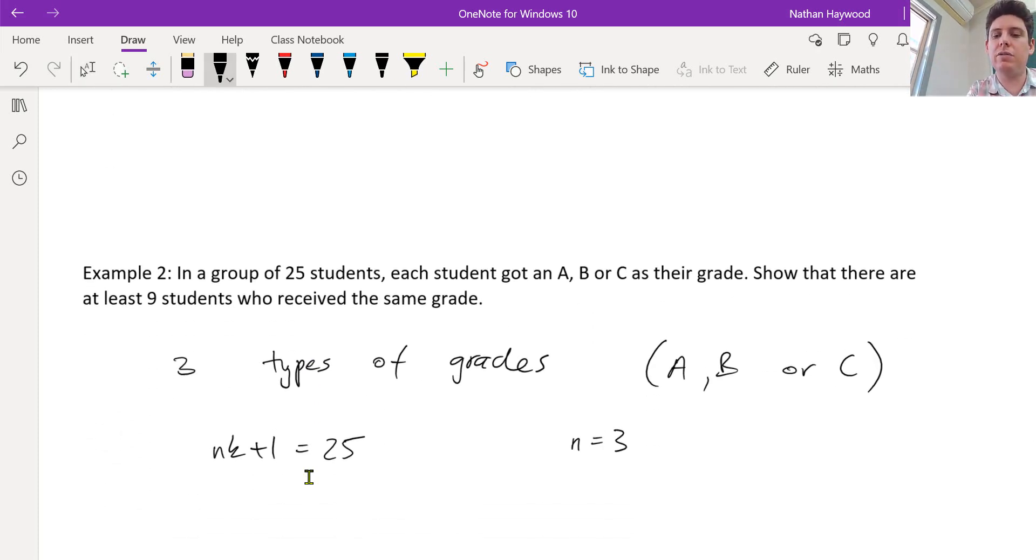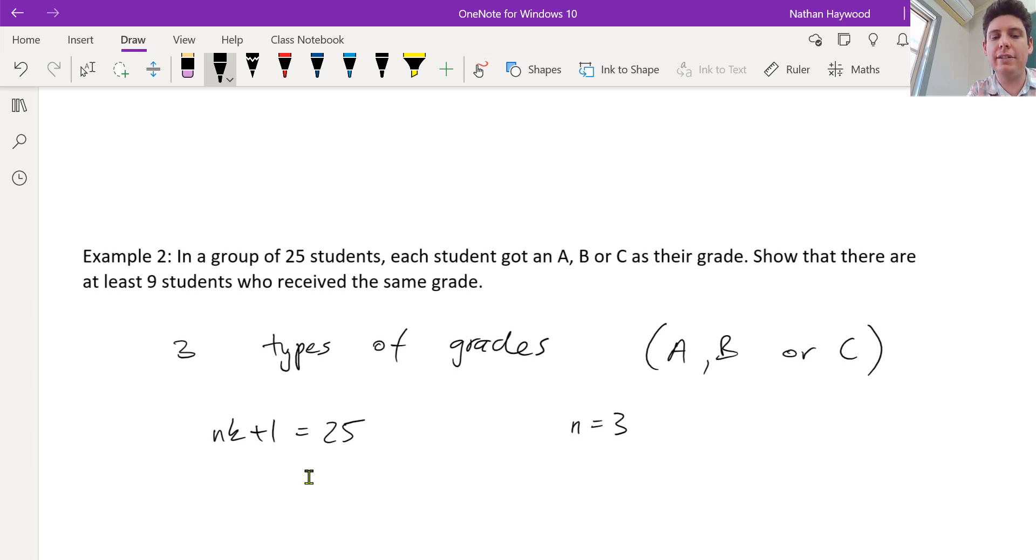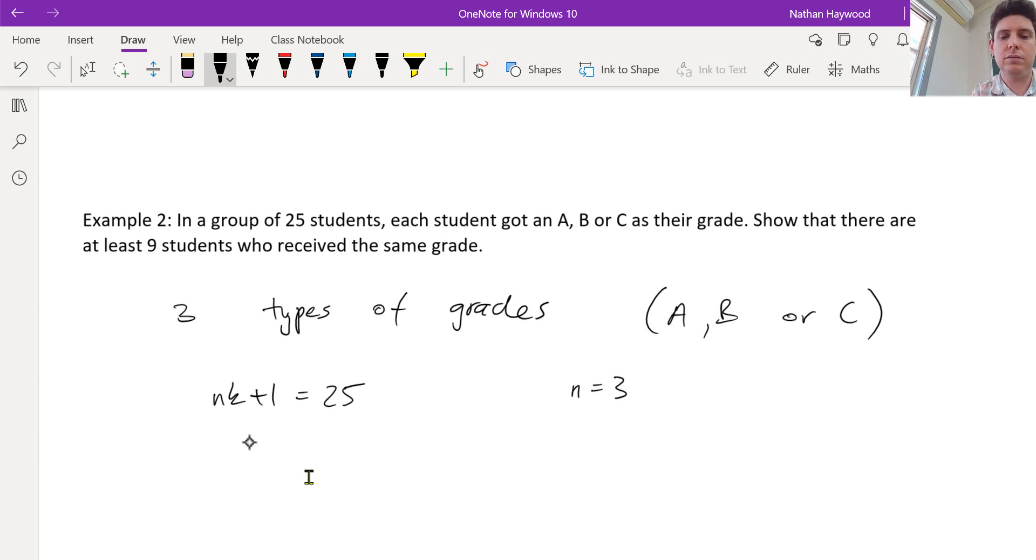So n is the number of things we can do, which is the grades. So n is the number of types of grades. So if we sub that in, we've got 3k plus one is 25, minus one from both sides, divided by 3, k is 8.